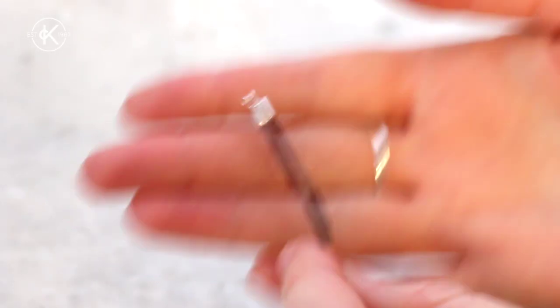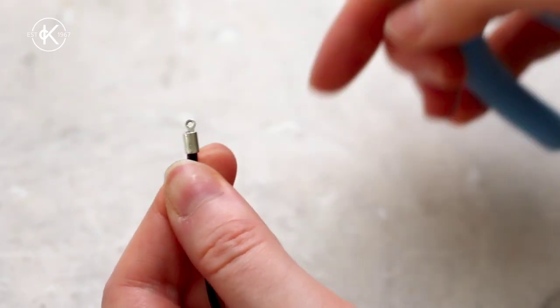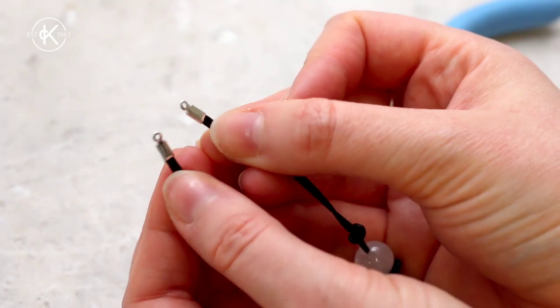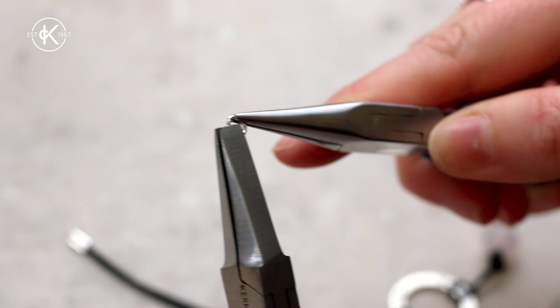Now you want to repeat this on the other end of the thread with the other cord end. At this stage you can give them a good tug just to make sure they're nice and secure before adding your final findings.